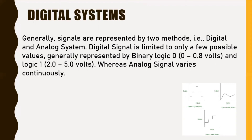Analog signals vary continuously. Both digital and analog systems are used to transmit signals from one place to another, like audio and video. Digital systems use binary formats such as 0 and 1, whereas analog systems use electrical pulses with varying magnitude to send and receive data.